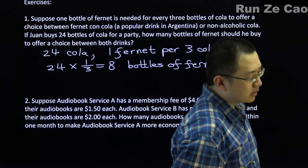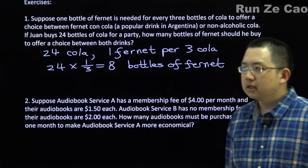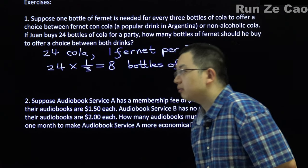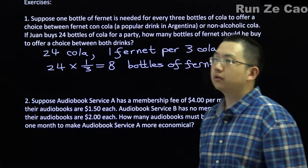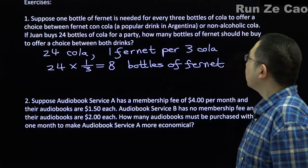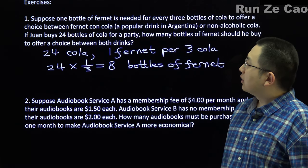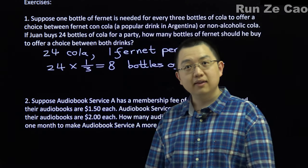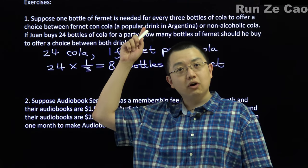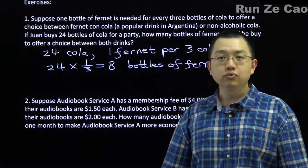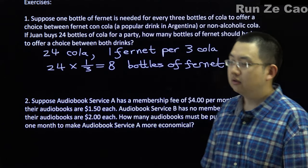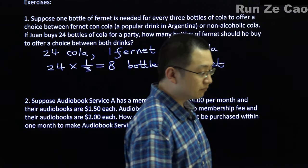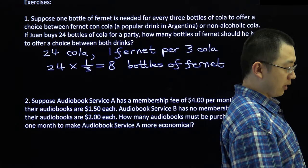A typical ratio is something like one third, or about thirty percent Fernet to cola. So one bottle of Fernet for every three bottles of cola would leave you with one extra bottle of cola for people who are either too young to drink alcohol or are teetotalers, i.e. don't drink alcohol. Seems reasonable for a party.